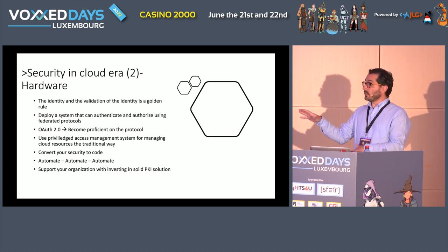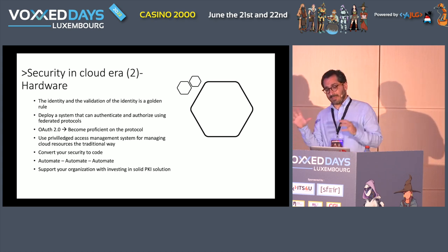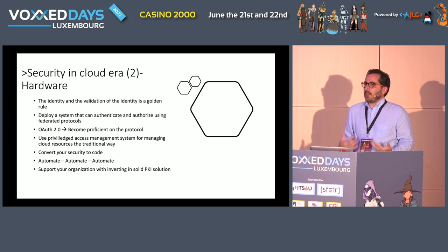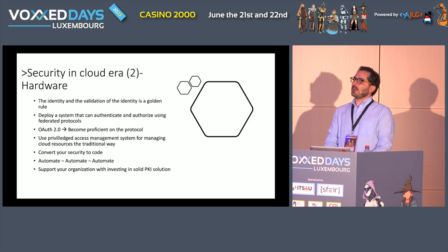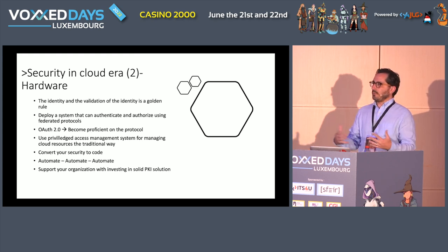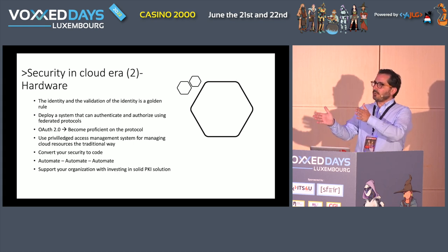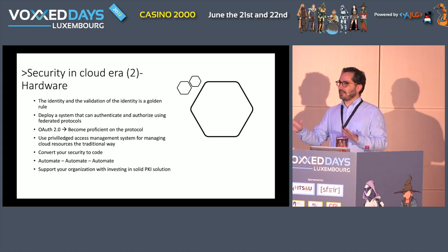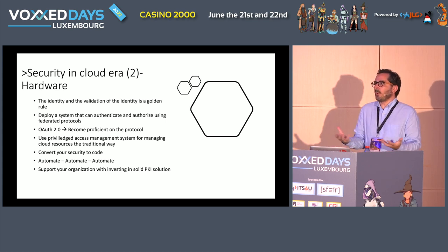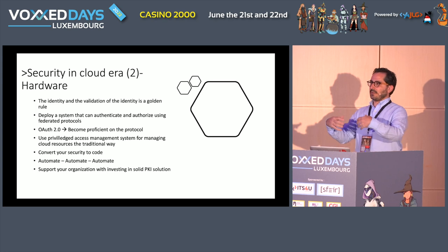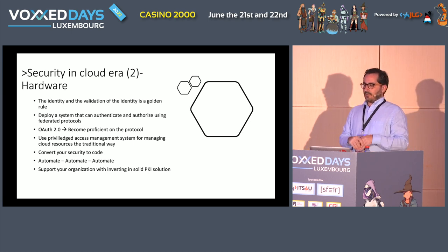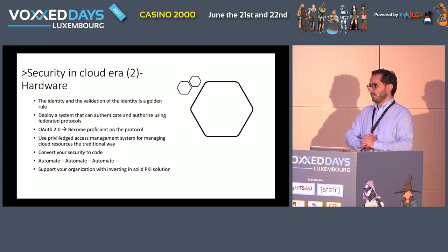The software development process needs to change, but also the mindset of how you do architecture in hardware. When you deploy a system, that system needs to support federated protocols and you need to be able to manage the identity of the system. The barrier between software and hardware is increasingly fuzzy. We see full-stack developers — I call them simply really good engineers who need to understand the environment their software executes in. A PAM system should be part of your infrastructure without any second doubt.